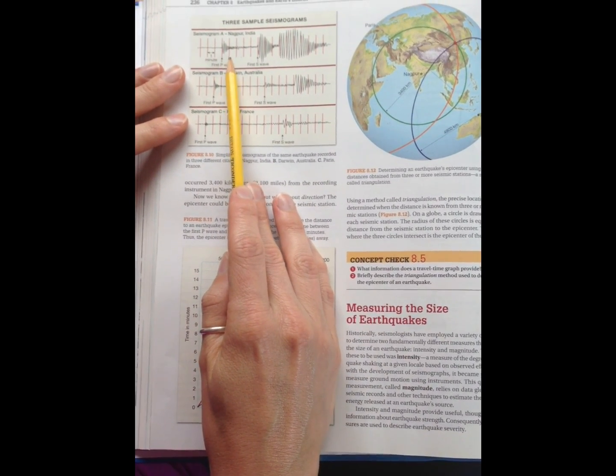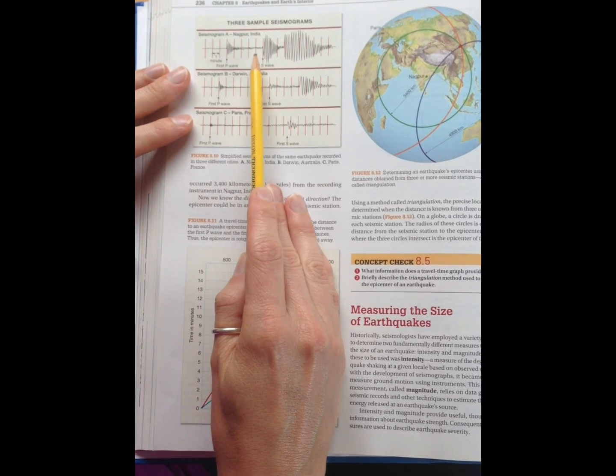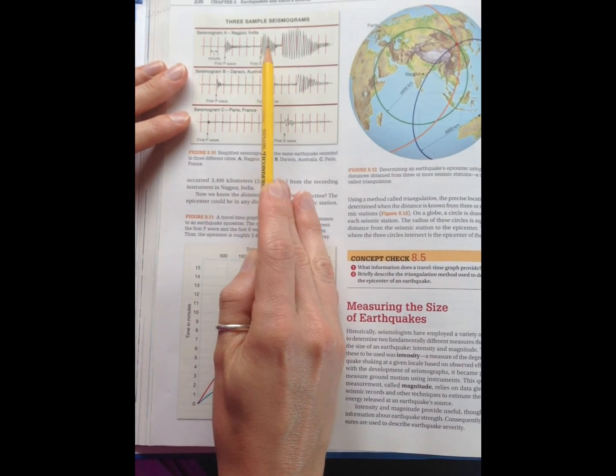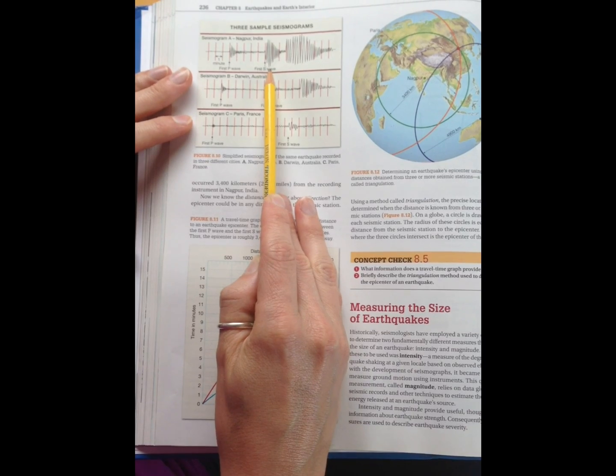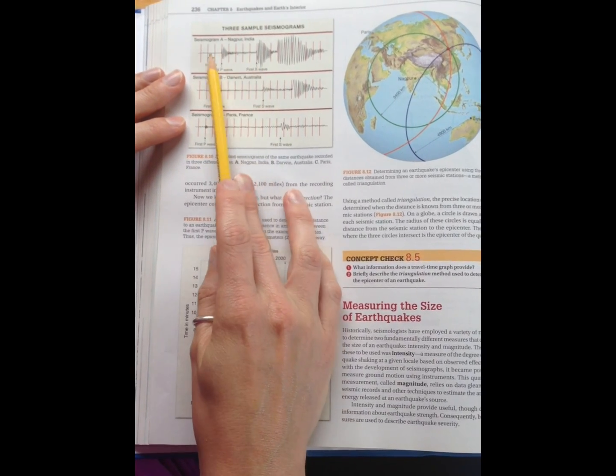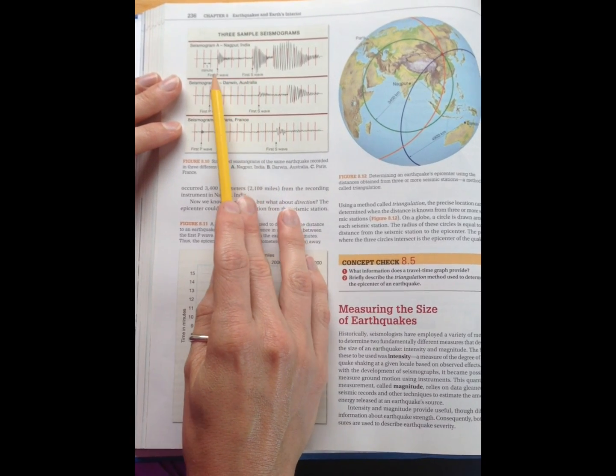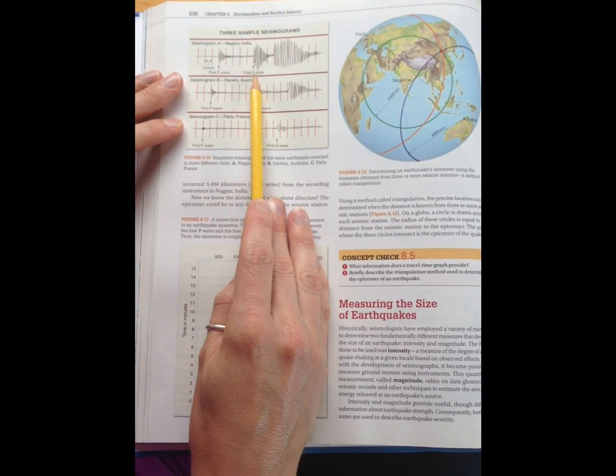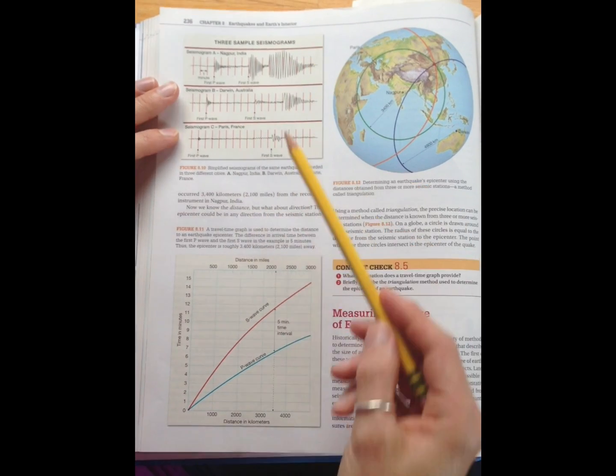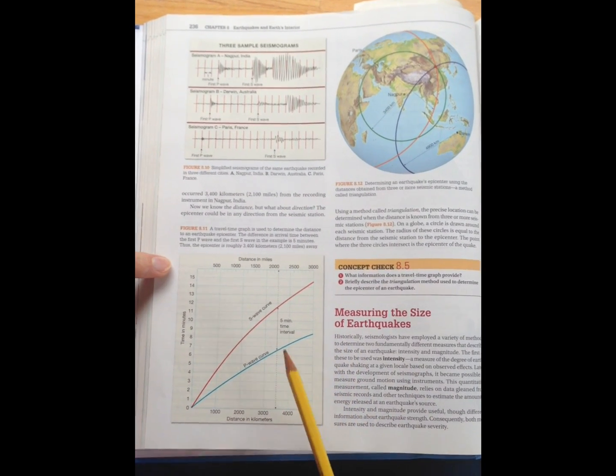And then one minute, two, three, four, five minutes later, you get the arrival of the S-seismic wave. Okay, so that's the important first piece of information to get, so at your seismic station in India, the difference between the P-wave and the S-wave arrival times is five minutes. Then you want to go down to your time travel graph.